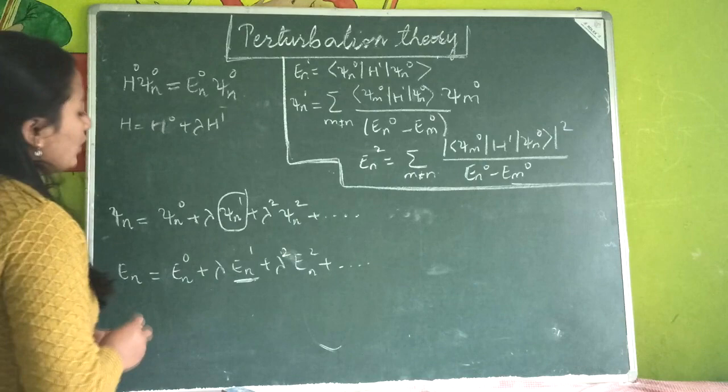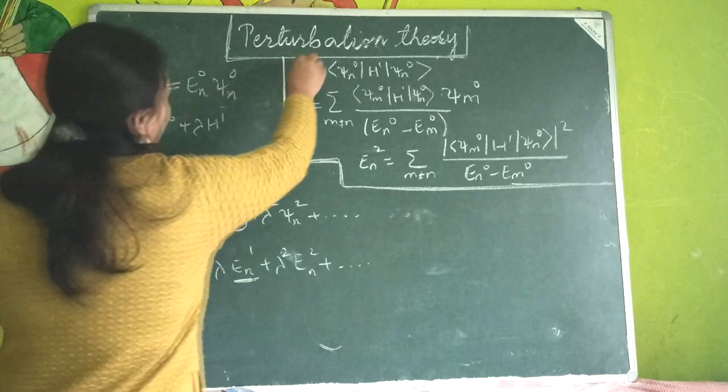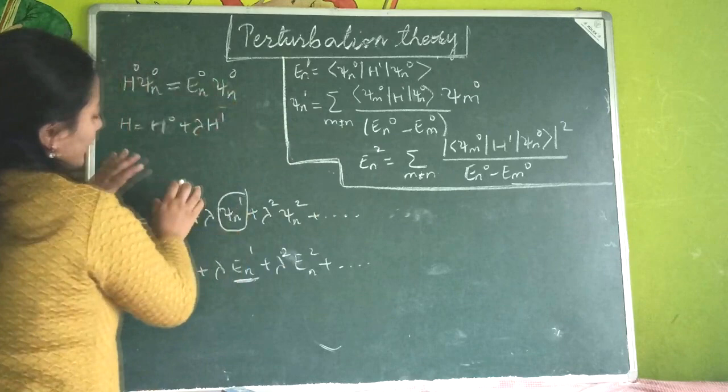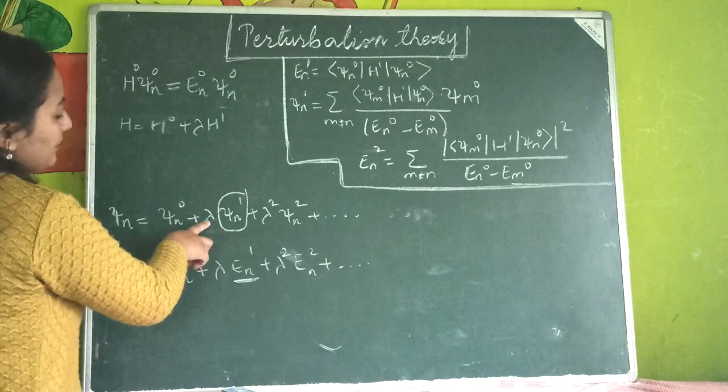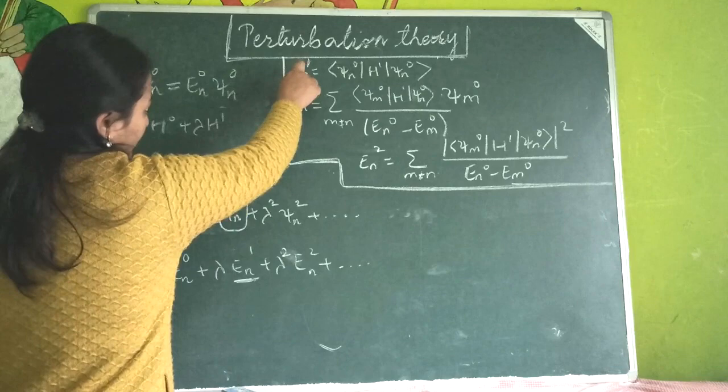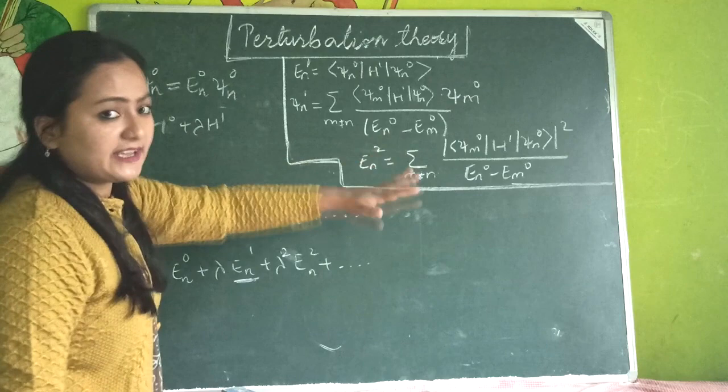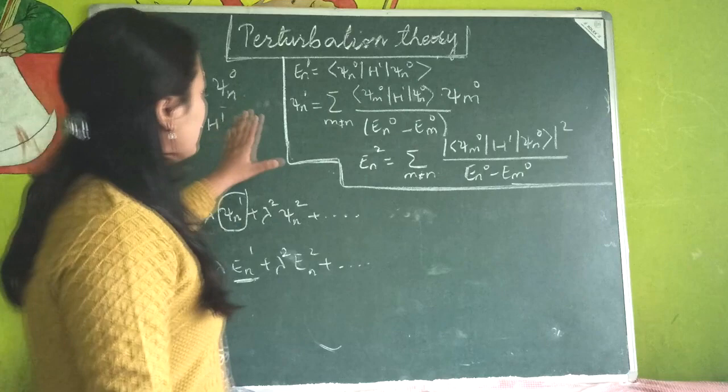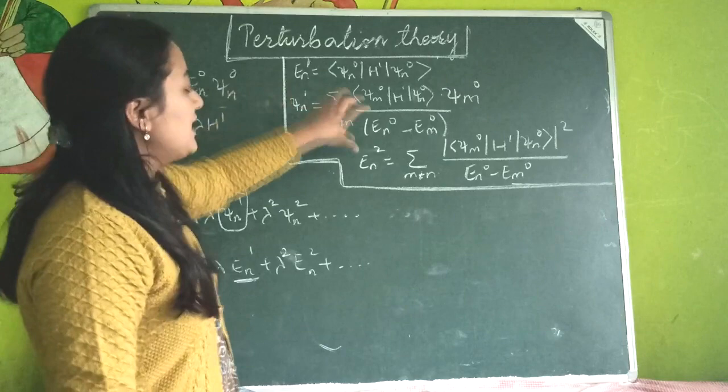We substitute these expansions into the Schrödinger equation and find expressions for ψ_n¹ by comparing equations in powers of λ. The terms with λ give equations for E_n¹ and ψ_n¹, and the terms with λ² give equations for E_n² and ψ_n². We will concentrate on the first-order correction to the energy eigenvalue and eigenfunction, and the second-order correction to the energy eigenvalue.